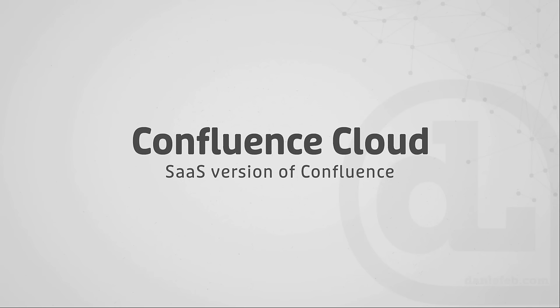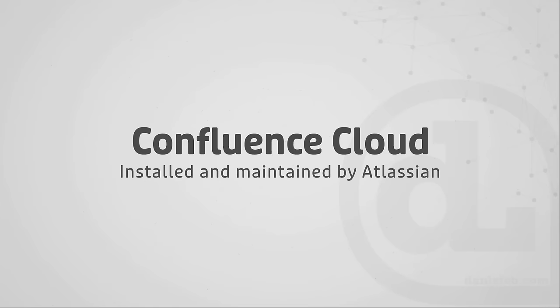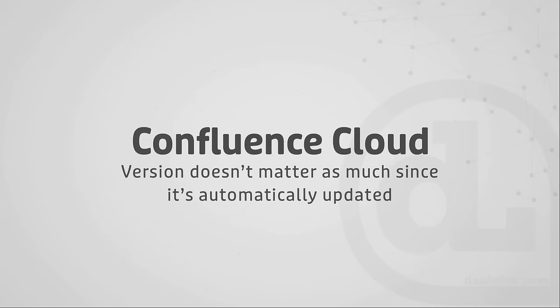There are going to be pros and cons for each of these. Probably the biggest benefit to Confluence Cloud is that you don't have to worry about installing or maintaining Confluence to make sure it's up and running and accessible by everyone on your team. And if there is a new version of Confluence that gets released, Atlassian is automatically going to roll out those updates and make sure that no data gets lost as new versions are installed. That means the version doesn't really matter as much because it's automatically going to be updated.